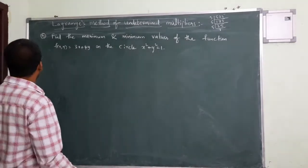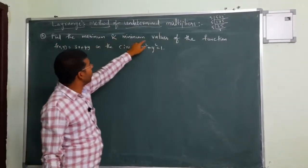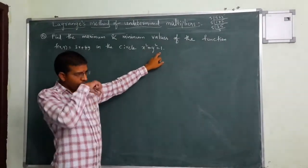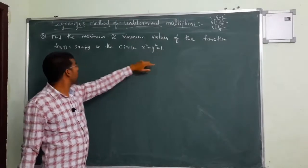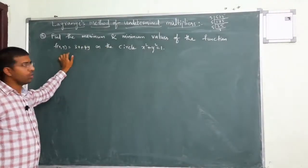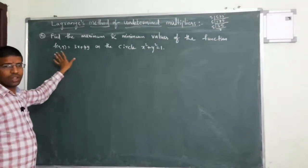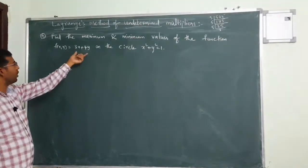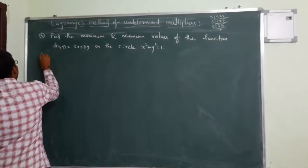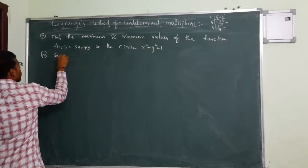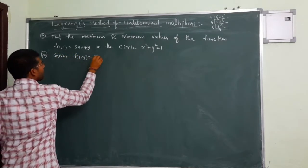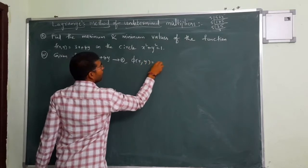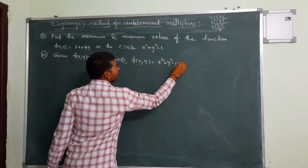Let us look into the fifth problem: find the maximum and minimum values of the function 3x plus 4y on the circle x squared plus y squared equal to 1. Given f of x, y is equal to 3x plus 4y, and the given condition is phi of x, y equals x squared plus y squared minus 1 equal to 0. This is equation 2.